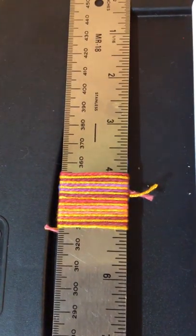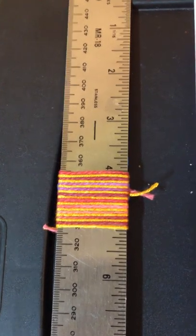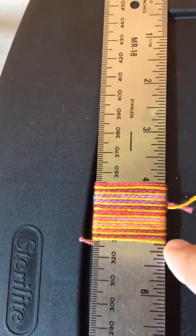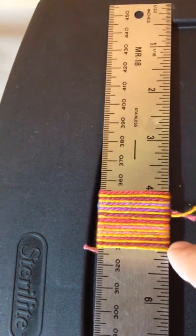I have 20 threads wrapped around one inch of my ruler. This is for the two colored warp, so I have one yellow and one of this pinky color.